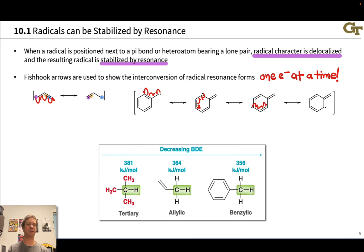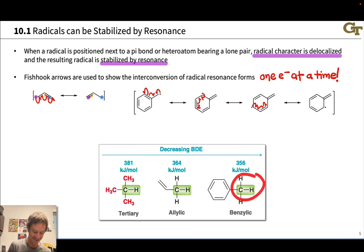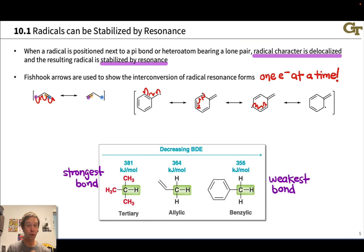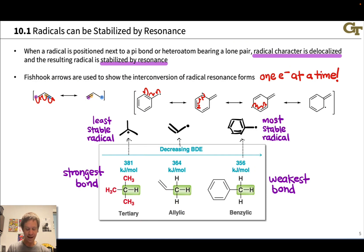Naturally, we see the stabilities of these radicals reflected in bond dissociation energies. Comparing the BDE for a tertiary C–H bond to the allylic C–H bond, the allylic C–H bond is easier to break than the tertiary C–H bond. And the benzylic C–H bond is even easier to break than the allylic C–H bond. The strongest bond in this series is the tertiary C–H, and the weakest is the benzylic C–H. The additional resonance forms in the allylic and benzylic radicals make these more stable, with the benzylic radical being the most stable and associated with the weakest C–H bond for homolytic cleavage.